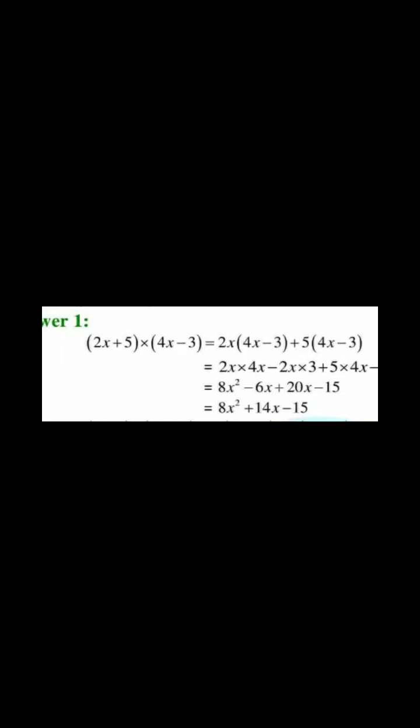So erase 5. What will remain there? 2x into 4x minus 3. Then mean monomial with binomial, and you have done this earlier. Then next step is erase 2x, and what you will be left with is 5. So 5 into 4x minus 3.